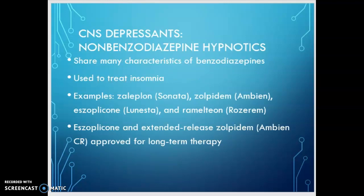Non-benzodiazepine hypnotics share many characteristics of the benzodiazepines and are used to treat insomnia. Examples include zaleplon, which is Sonata, zolpidem, that's Ambien, eszopiclone, which is Lunesta, and ramelteon, or Rozerem. Eszopiclone and extended-release zolpidem, that's Ambien CR, are approved for long-term therapy; the others are not. Ambien is starting to fall out of favor because of its ability to cause people to do things while they think they're asleep but are actually awake — walking, driving, and doing things they wouldn't normally do.